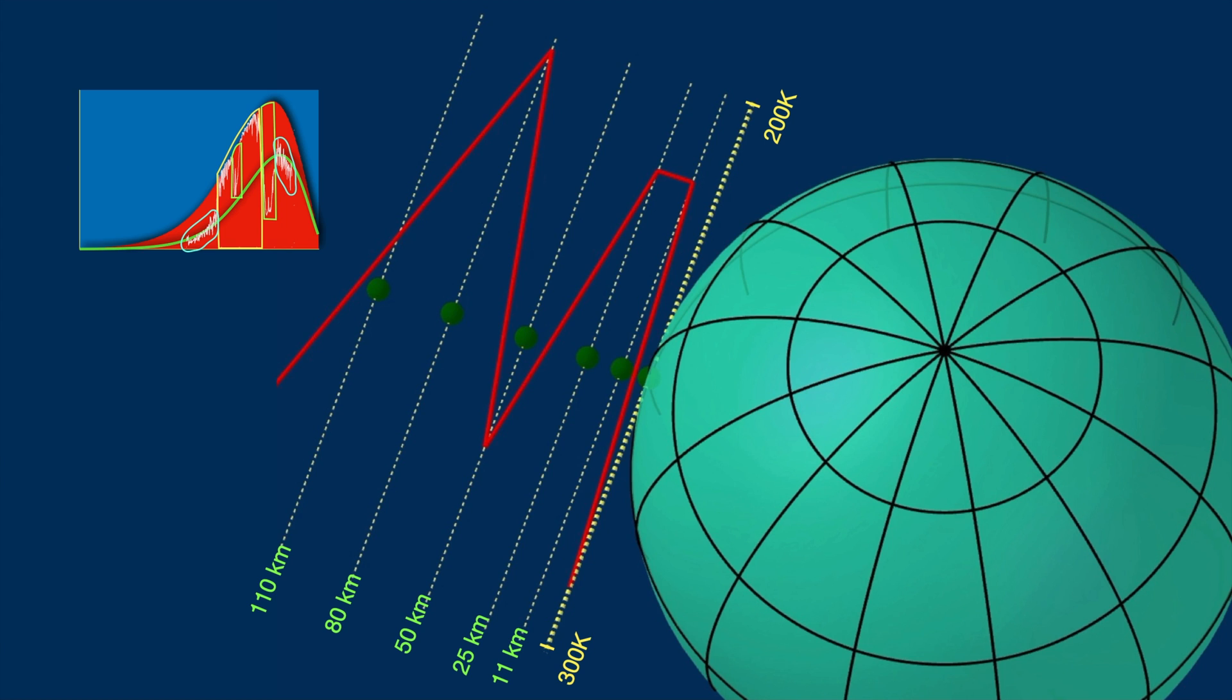So water absorbs the Earth's emission and then emits according to its own temperature, which is lower. And the ozone and carbon dioxide bands in the middle are even lower than these 275 Kelvin lines, so the emissions from those bands occur much higher.